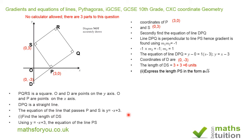Part 2 says: express the length PS in the form A times the square root of B. Now triangle SOP is not only a right-angle triangle, it's also an isosceles triangle, because OP = 3 and OS = 3. So to find PS, we use Pythagoras.